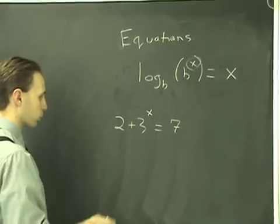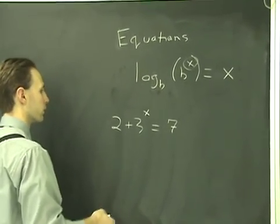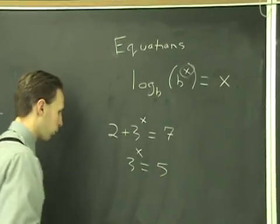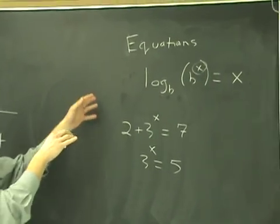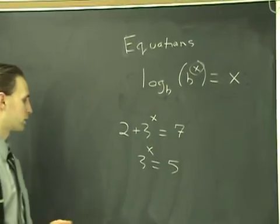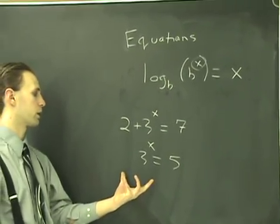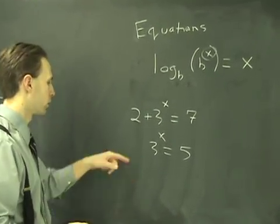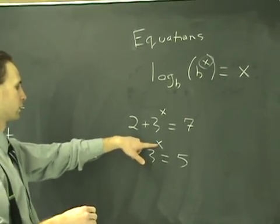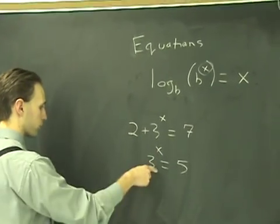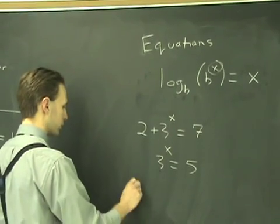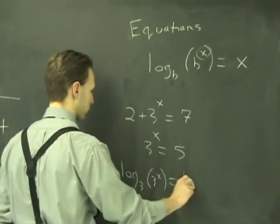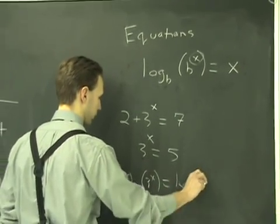Solve for X. It says, well, what are you going to do? You're going to want to take away 2. 3 to the X equals 7 minus 2 is 5. And once you do all the addition and subtraction multiplication and things, you come down to an exponential equation. What you do is you take the logarithm of both sides according to whatever base has the exponent in it. So from this step down, you would say log base 3 of 3 to the X equals log base 3 of 5.